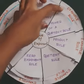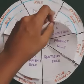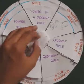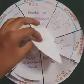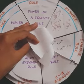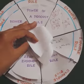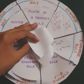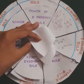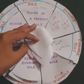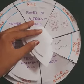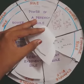Last but not least is the power of quotient rule. Its rule is (x/y)^m. An example is (x^2 / y^3)^4 = (x^2)^4 / (y^3)^4 = x^8 / y^12.